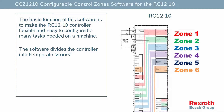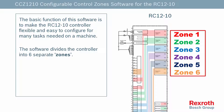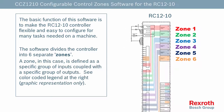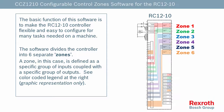The software divides the controller into six separate zones. A zone, in this case, is defined as a specific group of inputs coupled with a specific group of outputs. See the color-coded schematic at the right for a representation of the different zones.